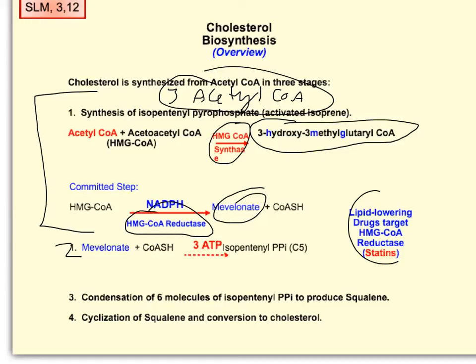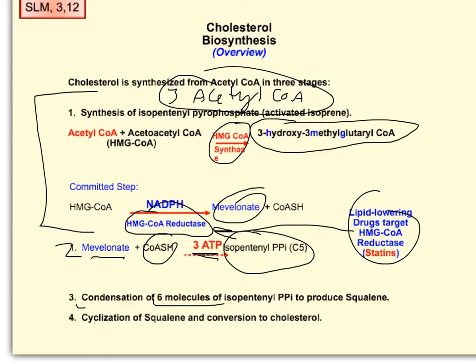Most lipid-lowering drugs target one of these two molecules, and primarily the reductase. Step two is adding a CoA and three ATPs to form isopentenyl pyrophosphate. Step three combines six isopentenyl pyrophosphates to produce squalene. And then the last step is the cyclization of squalene to cholesterol.